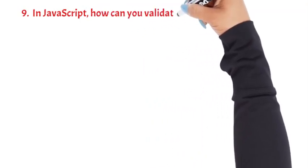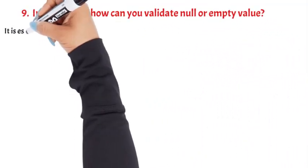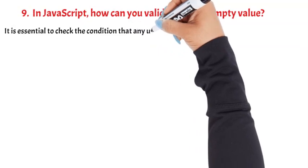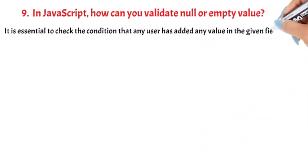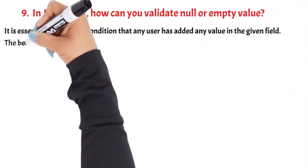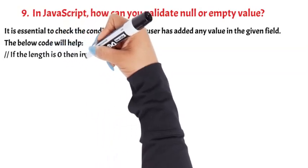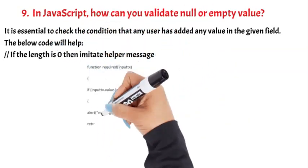Question 9: In JavaScript, how can you validate a null or empty value? It is essential to check the condition that any user has added a value in the given field. The code checks if the length is zero, then initiates a help or error message.